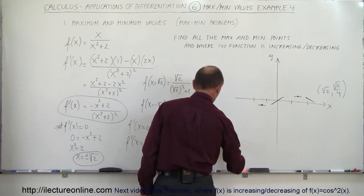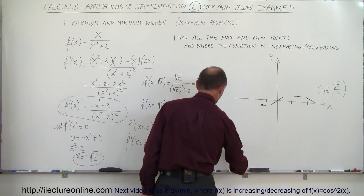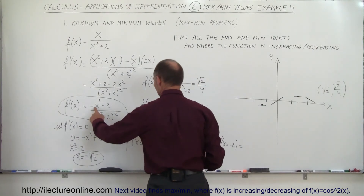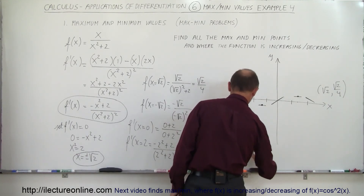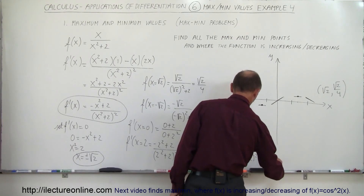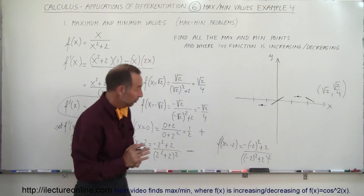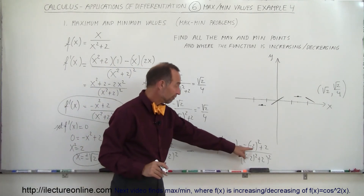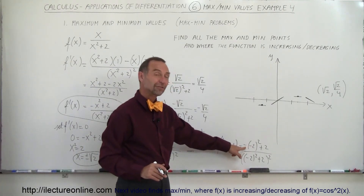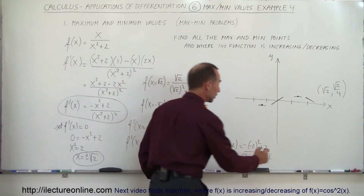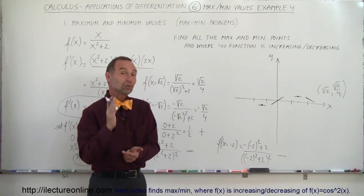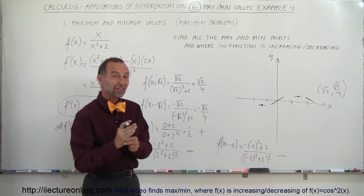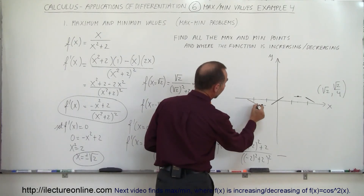f prime when x equals negative 2: we have minus negative 2 squared plus 2 divided by negative 2 quantity squared plus 2 quantity squared. The denominator will always be positive. The numerator: negative 2 squared is 4, put a minus sign in front, that's negative 4 plus 2 — a negative value again. A negative value means the slope is negative, which means the function is decreasing to the left as well.